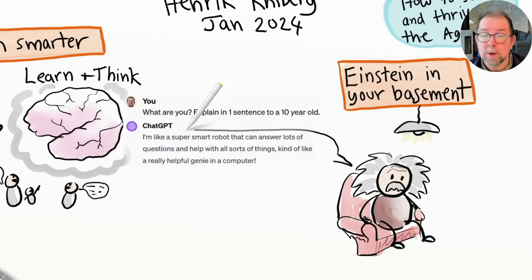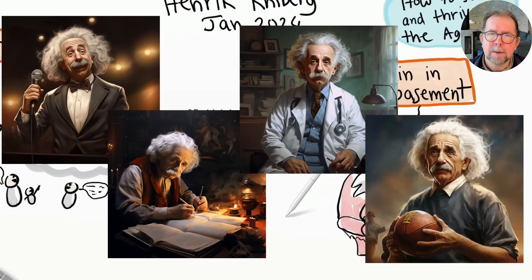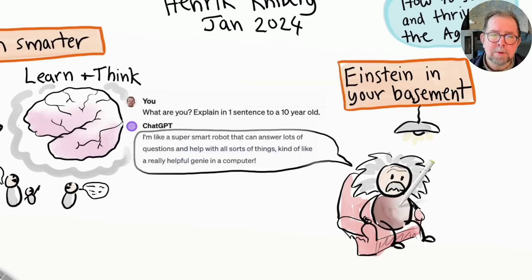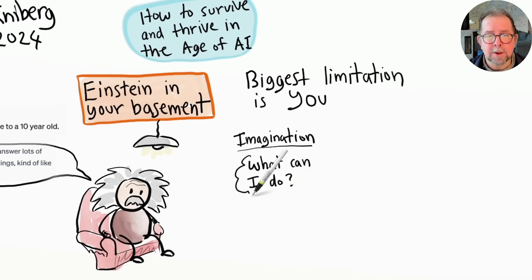He can also take on any role you want - a comedian, poet, doctor, coach - and will be an expert within that field. He has some human-like limitations though. He can make mistakes, he can jump to conclusions, he can misunderstand you. But the biggest limitation is actually your imagination and your ability to communicate effectively with him.